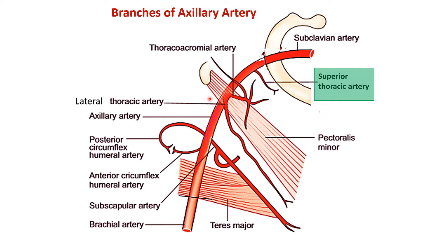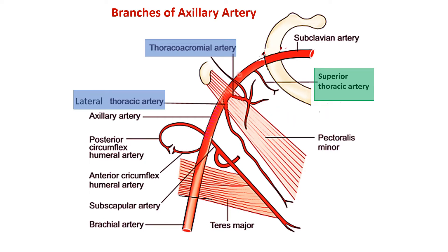The second part, which passes behind pectoralis minor, gives two branches. The first is the thoracoacromial artery, which supplies the thoracic region and the shoulder, pierces the clavipectoral fascia, and divides into four branches. The second is the lateral thoracic artery, which runs along the lower border of pectoralis minor supplying the pectoral region.